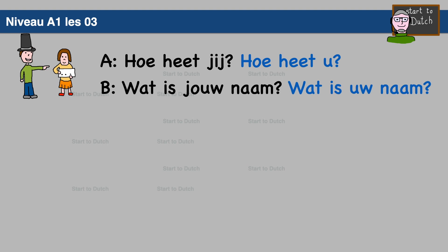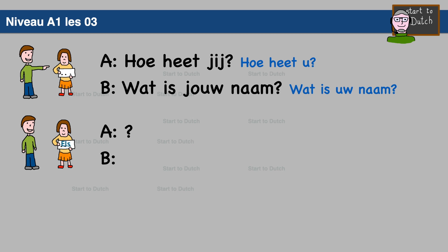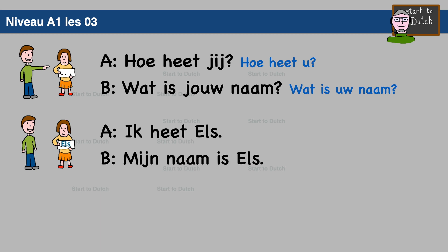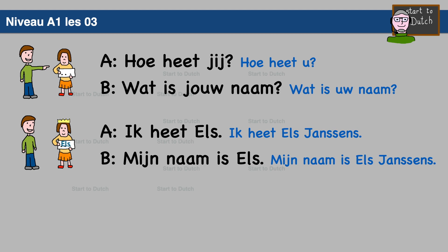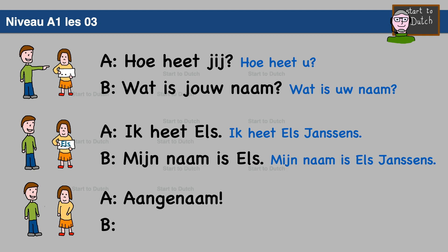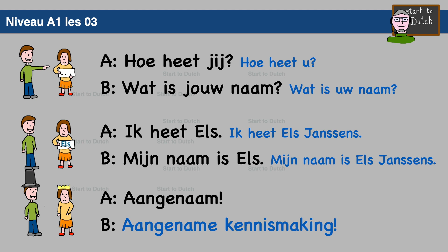What is uw naam? What would be in Dutch: I am called Els? — Ik heet Els. That's right. And what would be: My name is Els? — Mijn naam is Els. In a formal context, you would add not just your first name but your family name as well. The third question: what would be 'nice to meet you'? — Aangenaam. Here's an extra one not in the dialogue — a longer, more formal variant: Aangenaam kennismaking.